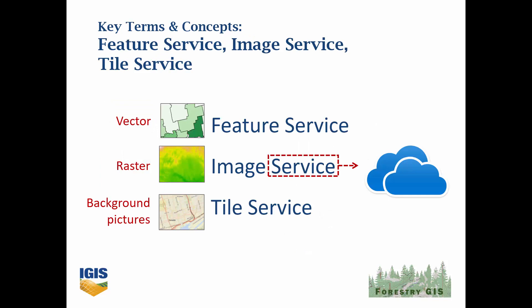In addition to those file formats, more and more you hear about services. Service just means in the cloud, and the cloud just means someone else's computer, possibly very far away. So when you hear about using a feature service or an image service, that still means a source of spatial data, but it's coming over the internet. A tile service is similar, except that what gets delivered are background images for your map that you generally can't manipulate in any way.